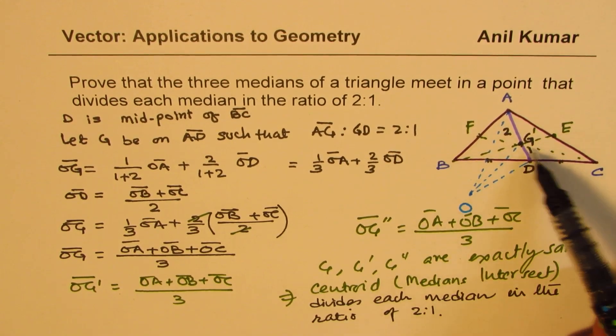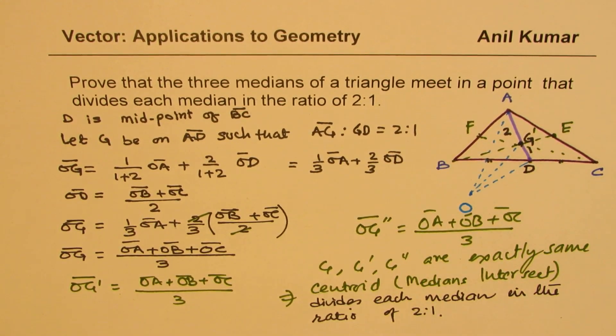The centroid divides each median in the ratio of 2:1. So individually, we could show for each median following the same method. That is how we could prove it.